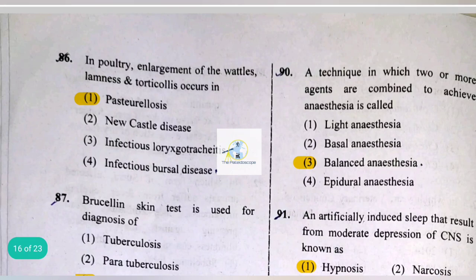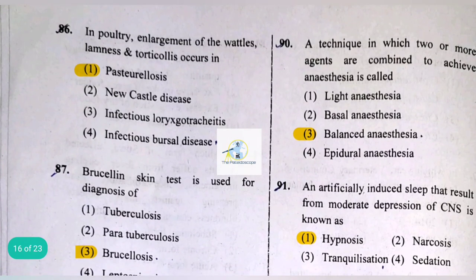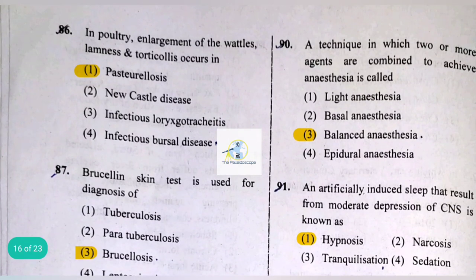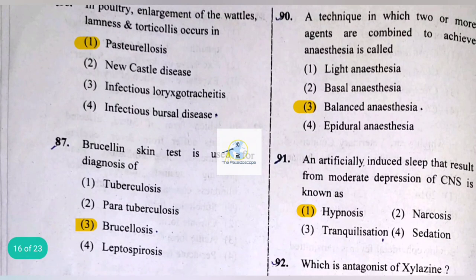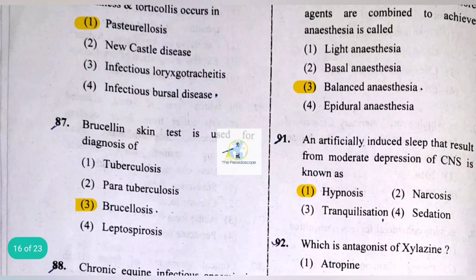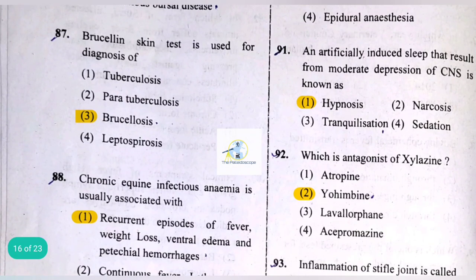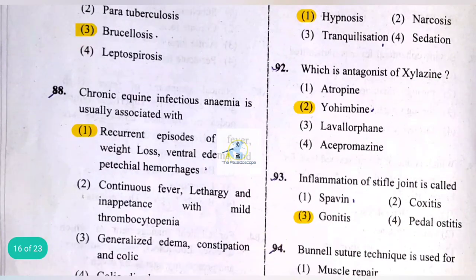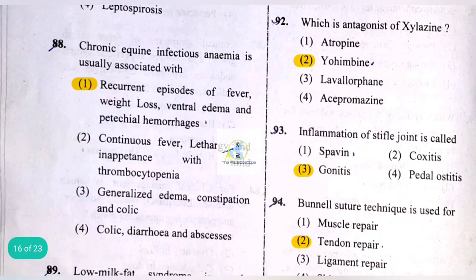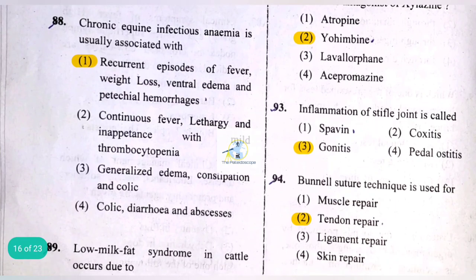The questions in this examination range from difficult to easy, covering important topics. A technique in which two or more agents are combined to achieve anesthesia is called balanced anesthesia. An artificially induced sleep resulting from moderate depression of the CNS is known as hypnosis. The antagonist of xylazine is yohimbine.